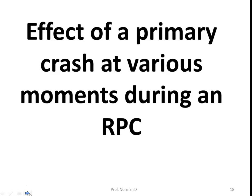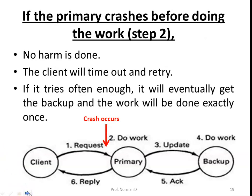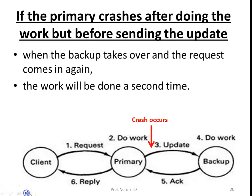Now let's look at the effect of a primary crash at various moments during an RPC. If the primary crashes before doing the work (before step 2), no harm is done — the client will time out and retry. Eventually it will reach the backup and the work will be done exactly once. If the primary crashes after doing the work but before sending the update (between steps 2 and 3), when the backup takes over the request comes in again and the work is done a second time.